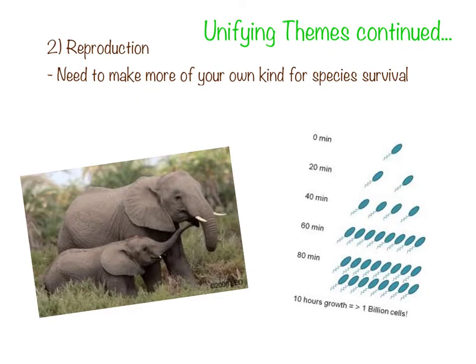Theme number two is reproduction. All living things can reproduce — make more of their own kind from one generation to the next. Some reproduce rapidly; for instance, bacteria doubles from one to two to four to eight, doubling in increments of twenty minutes. Whereas an elephant would have been pregnant for two years. Regardless of the time frame, organisms do not live forever, so reproduction is extremely necessary for the species' survival. Some studies that examine this theme are human development, embryology, and any area involving fertility.